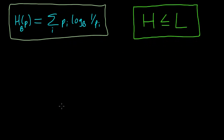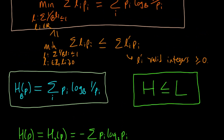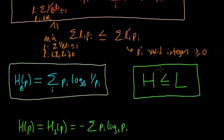One final notational remark: H_b denotes the base-b entropy. You might write H_2 for the base-two entropy, but because b is so often equal to two, people just abbreviate H(p) for H_2(p). You may also see this written as minus the sum of pi·log_2(pi), since log(1/x) = -log(x). So at last we have reached the fruits of our labor: entropy is a lower bound on our expected codeword length.